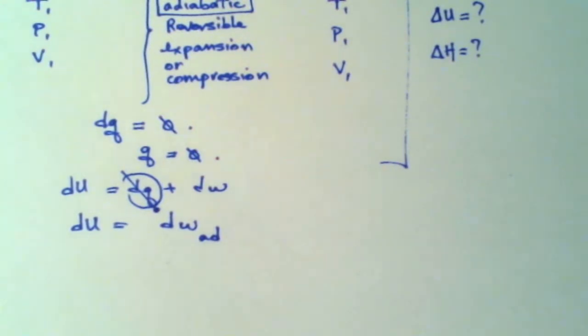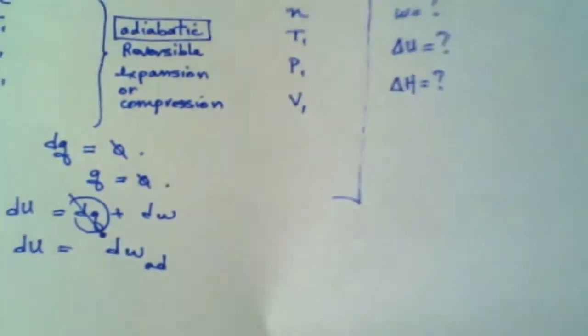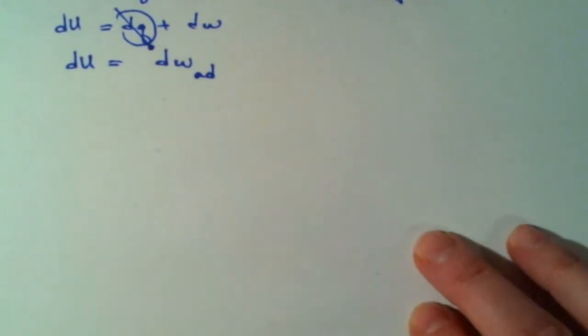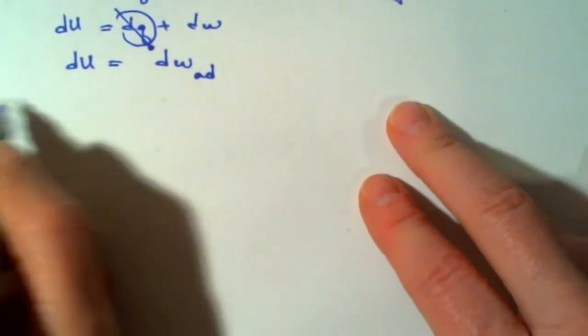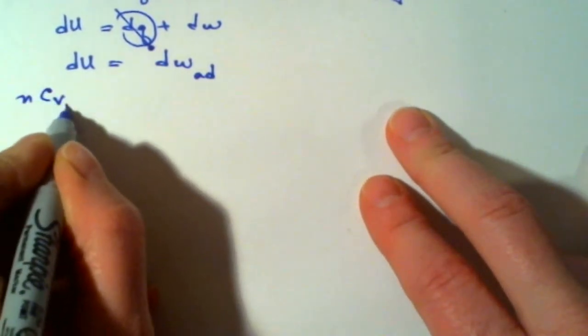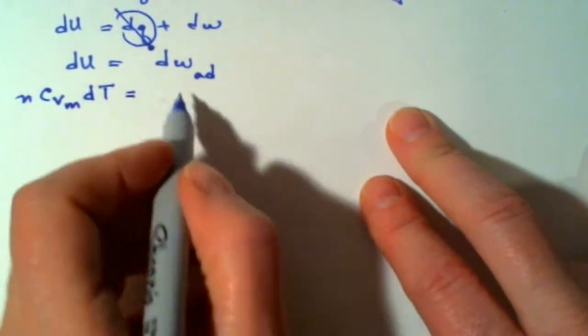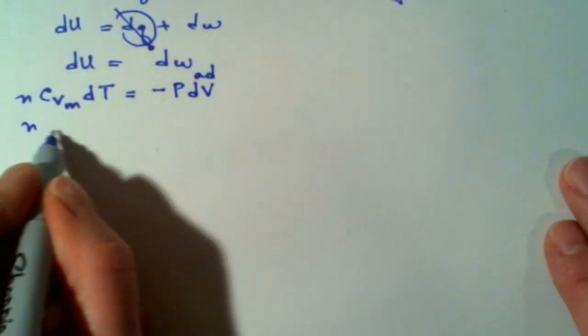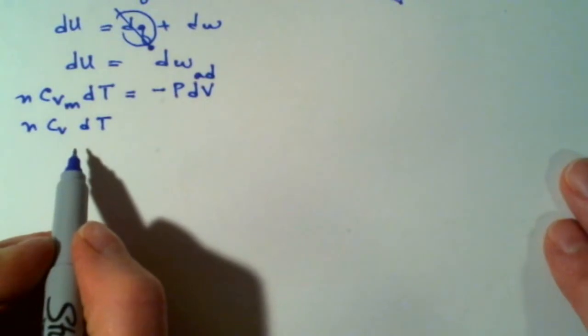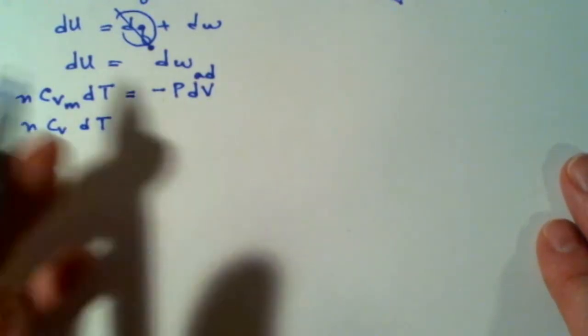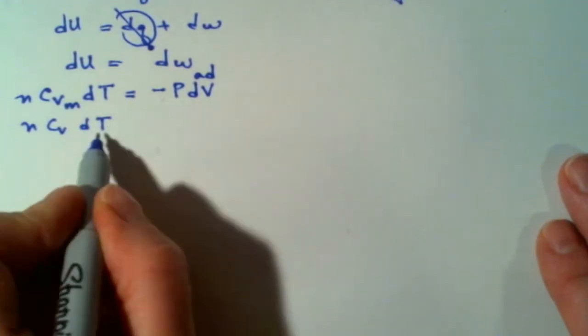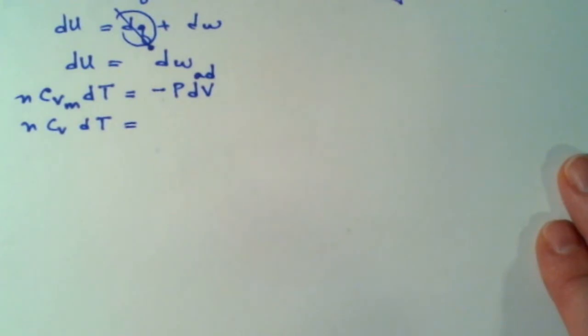So this kind of looks like a sticking point that, well, that's great that q is zero, and then if I find work or internal energy change, one or the other, that I've basically found both because they're equal to each other, but what is the formula? And so although this almost seems like a dead end, it's actually our starting point. And it's our starting point for a couple of really important formulas that help us. Now, du is equal to ncv dt, and dw is equal to minus p dv.